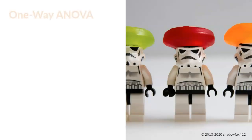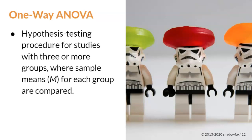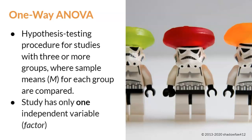In its simplest form, ANOVA allows for the comparison of three or more groups, like these three LEGO stormtroopers. In other words, the sample means of each group will be compared with each other in this statistical test. The words one-way refer to the fact that the ANOVA has only one independent variable being tested. In ANOVA terminology, an independent variable is referred to as a factor. A one-way ANOVA is a statistical test that is comparing three or more groups on one independent variable.